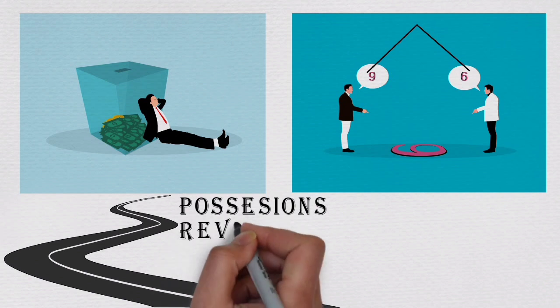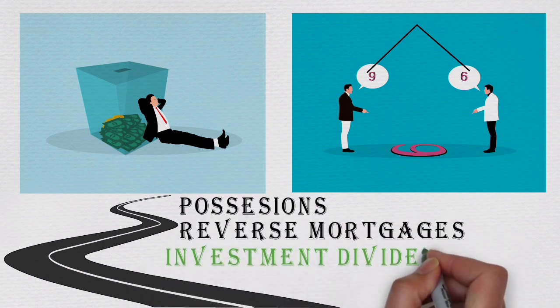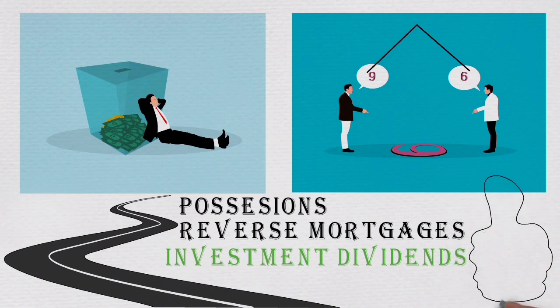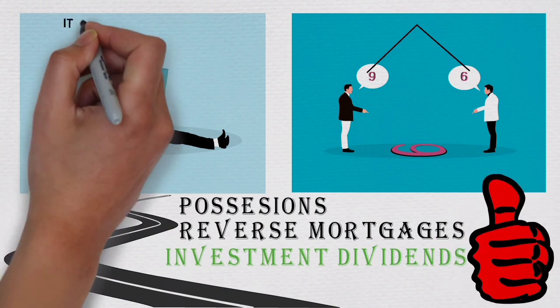You might want to sell your possessions, reverse mortgages. However, there is one forgotten way, living on investment dividends. And the best part is, you can make as much and even more than in your active day job.